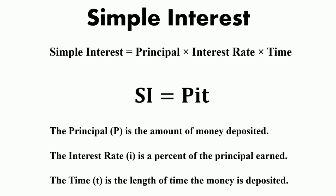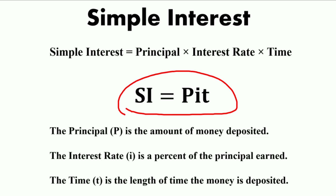If simple interest is applied, the interest is calculated only on the principal amount that was deposited. The formula for calculating simple interest is SI = P × I × T, where SI is the simple interest, P is the principal amount deposited, I is the interest rate as a percentage of the principal, and T is the time period — the length of time the money is deposited.